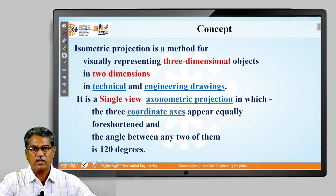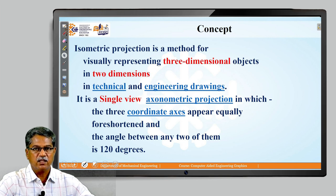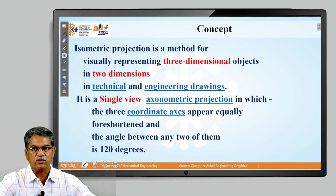What is isometric projection? It is the method for visually representing three-dimensional objects in two dimensions. Three-dimensional objects having length, height, and width will be drawn on a two-dimensional paper. We are using it in technical drawings, that is engineering drawings, and all technical and engineering drawings will be referring to isometric projections also.